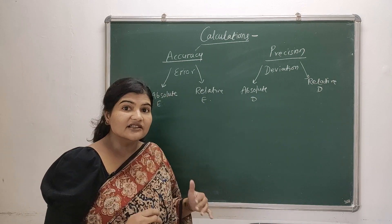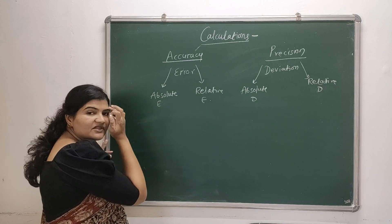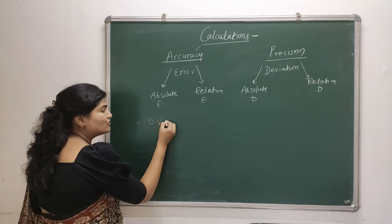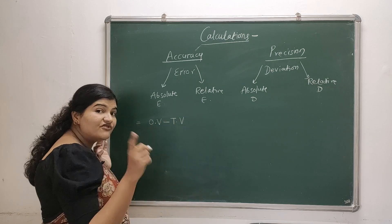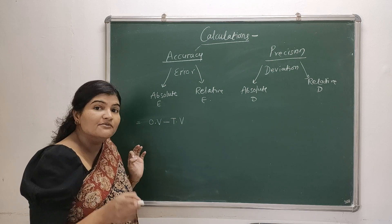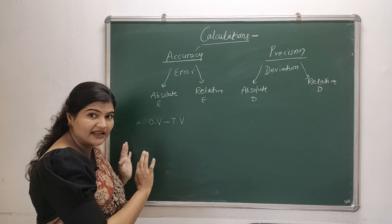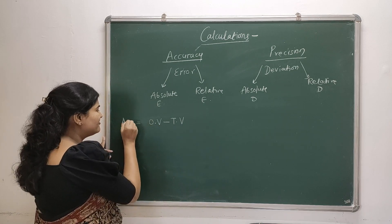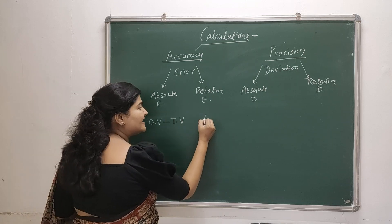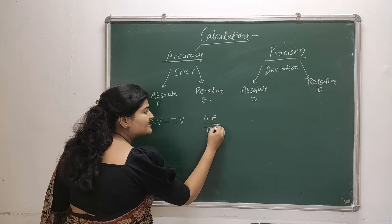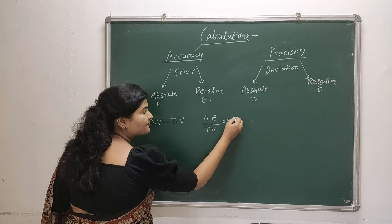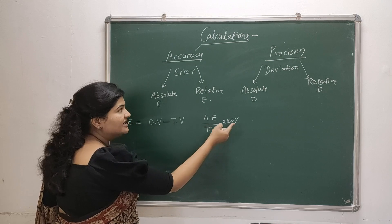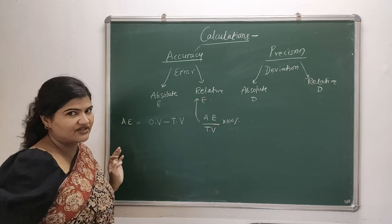First let's learn the formulas. Absolute error is very easy to calculate: it is the observed value minus the true value, with regard to sign — we have to keep the sign of the calculation. Then relative error: if we take the absolute error as a percentage of the true value — that is, absolute error divided by true value multiplied by 100 — that percentage will be our relative error.